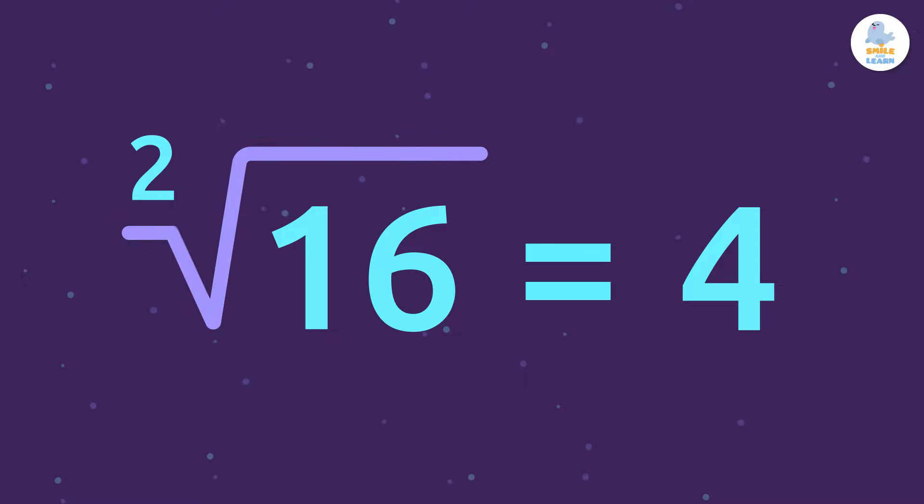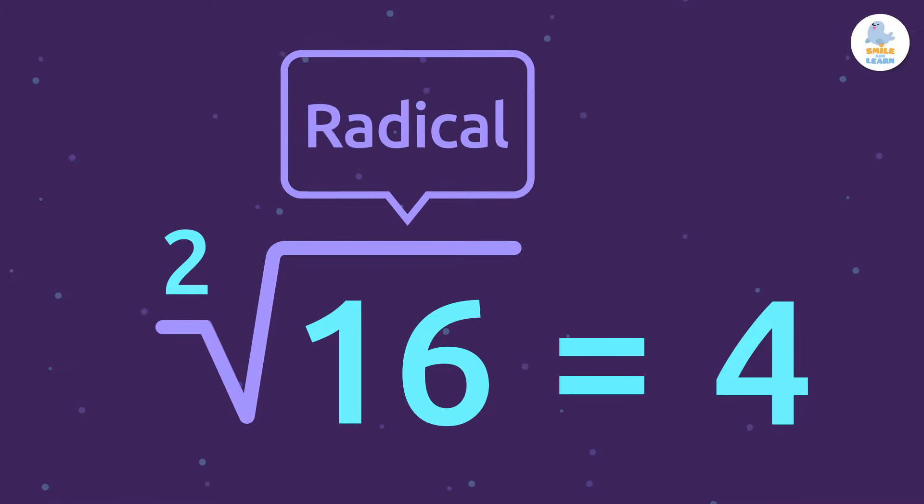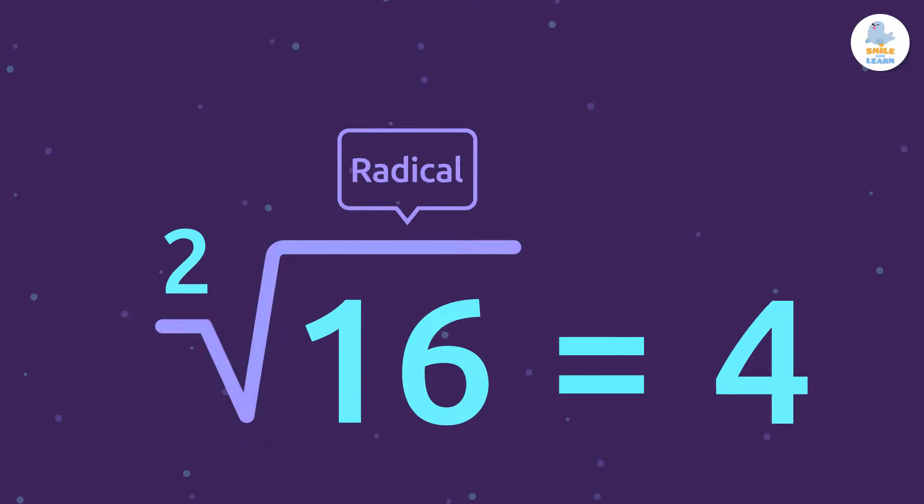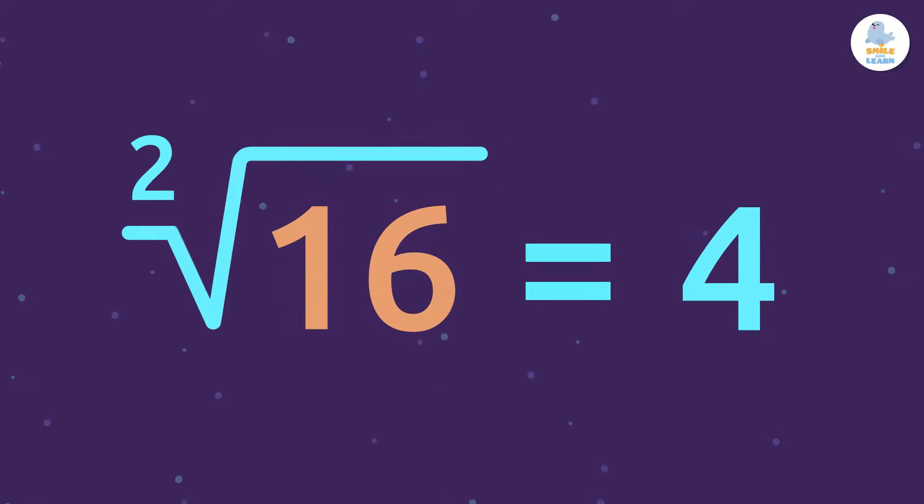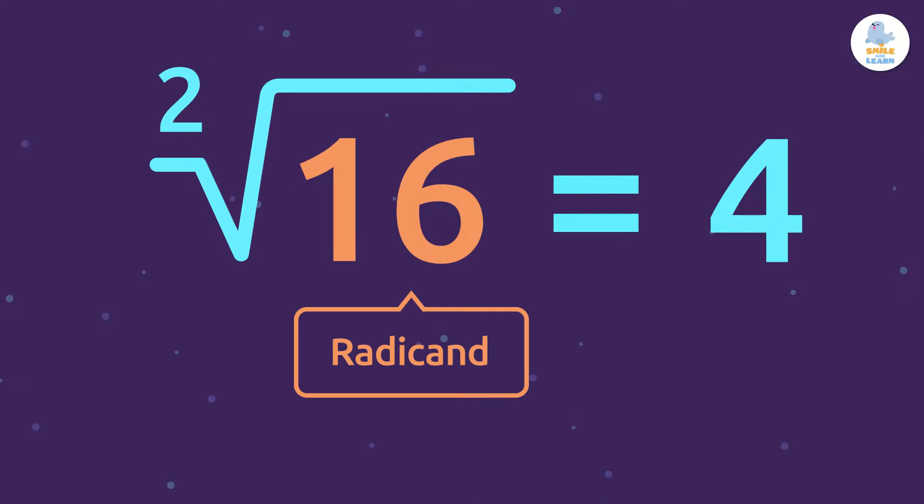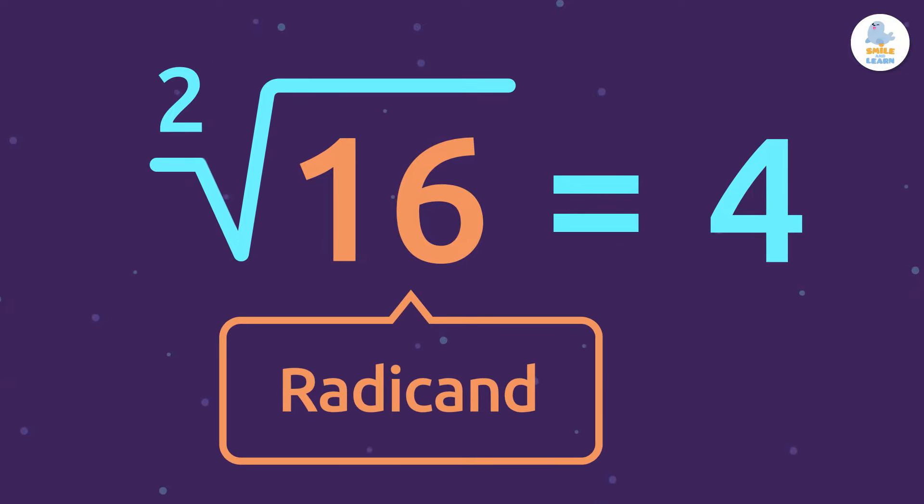This thing right here that looks like a box is the radical sign, which is what represents the square root. The number that we see inside the radical sign is called the radicand, which is the number 16 here.